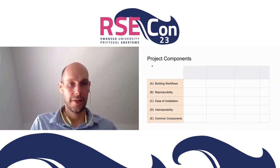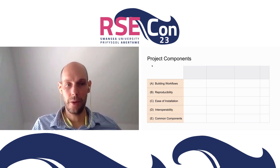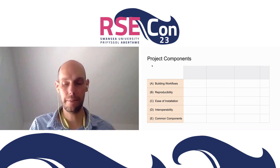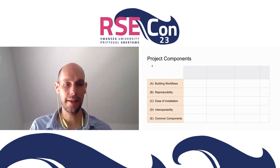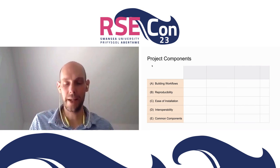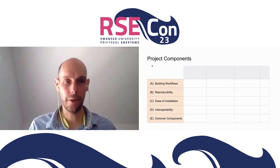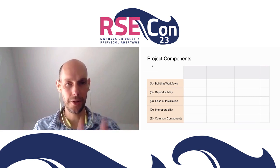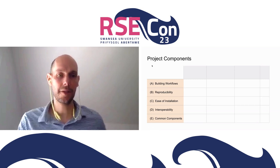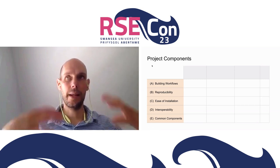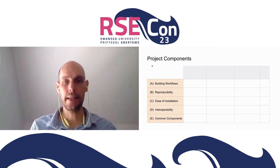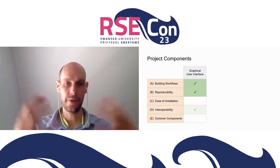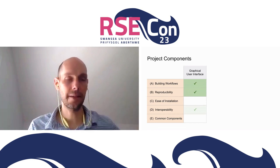Here are the project components. The challenges we've identified are: building workflows, making things reproducible, allowing programs to be installed easily, making them interoperable, and avoiding reinventing the wheel by having common components available. There are four components to this project. The first one is a graphical user interface — when you want to enable a workflow and make it easy, you need a GUI. This helps with building workflows and making things reproducible because that's built into the UI.